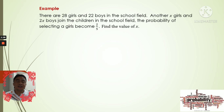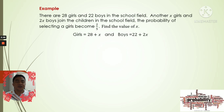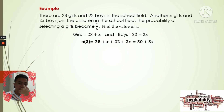The first thing we need to do is find how many girls and how many boys there are. We have the girls: 28 plus x, and the boys: 22 plus 2x, because x girls and 2x boys joined. Now we find the cardinality of the sample space: (28 plus x) plus (22 plus 2x), which gives us 50 plus 3x.